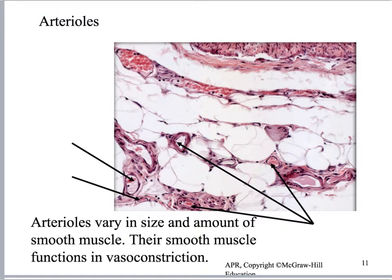When looking at many tissues and getting closer to the capillary beds, you'll start seeing arterioles cut transversely. They're basically round, with a hint of the tunica media. You can't see the tunica interna very well, but you can tell it's staining like simple squamous epithelium. With experience you start knowing that if you see this type of cut, it's most likely an arteriole.